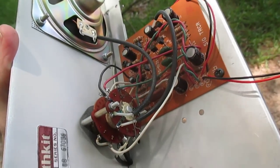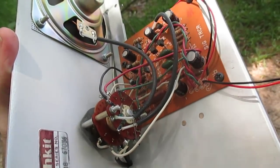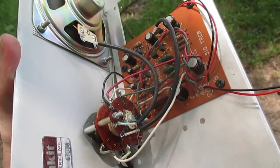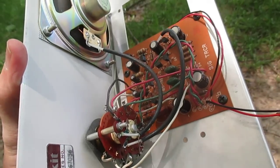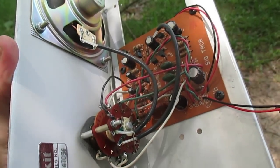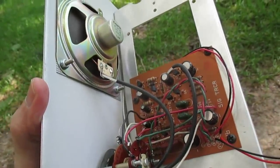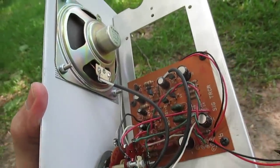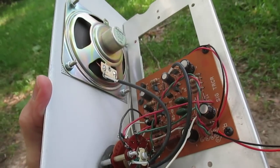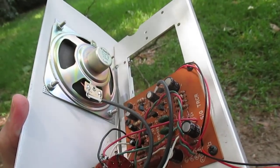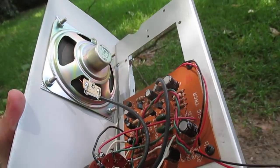While I had it apart I just went ahead and sprayed some cleaner in the function switch and the level control and I found a late 1986 date code on the potentiometer. So this thing was probably built in late '86 early '87. So now let's put it back together and slap some batteries in it and see what happens. There's really not a whole lot to go wrong with these so it'll probably just work.